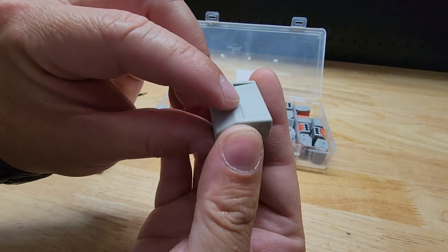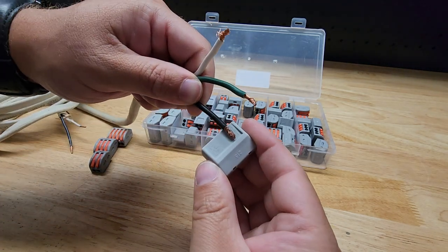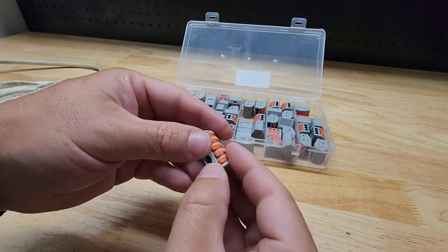If we look at the bottom, we have a depth gauge for when we're stripping our wires. We can just hold it here to know how much to strip off. It works for solid wire and multi-strand wire.